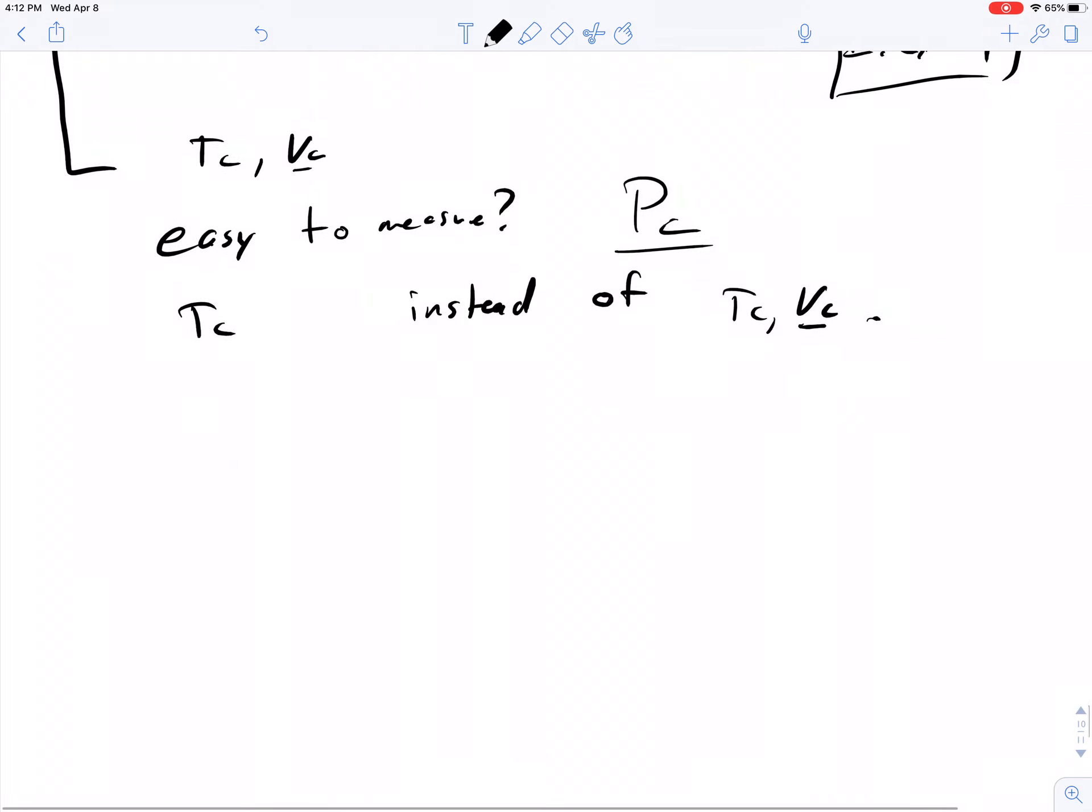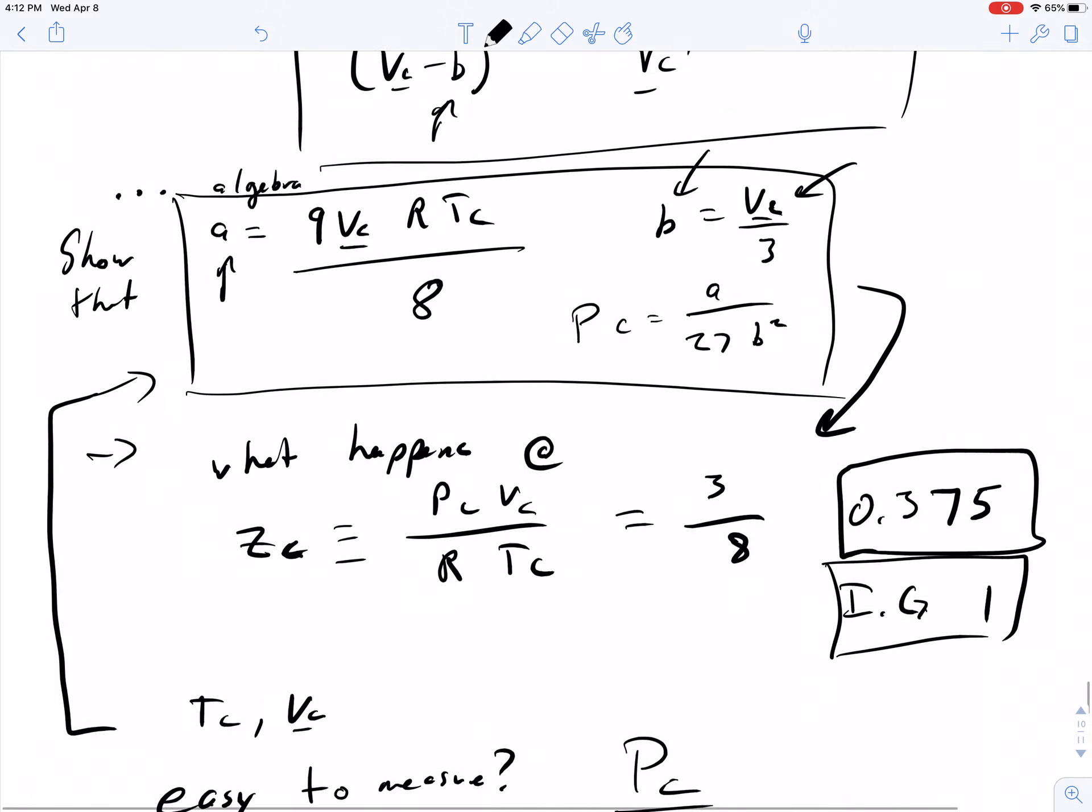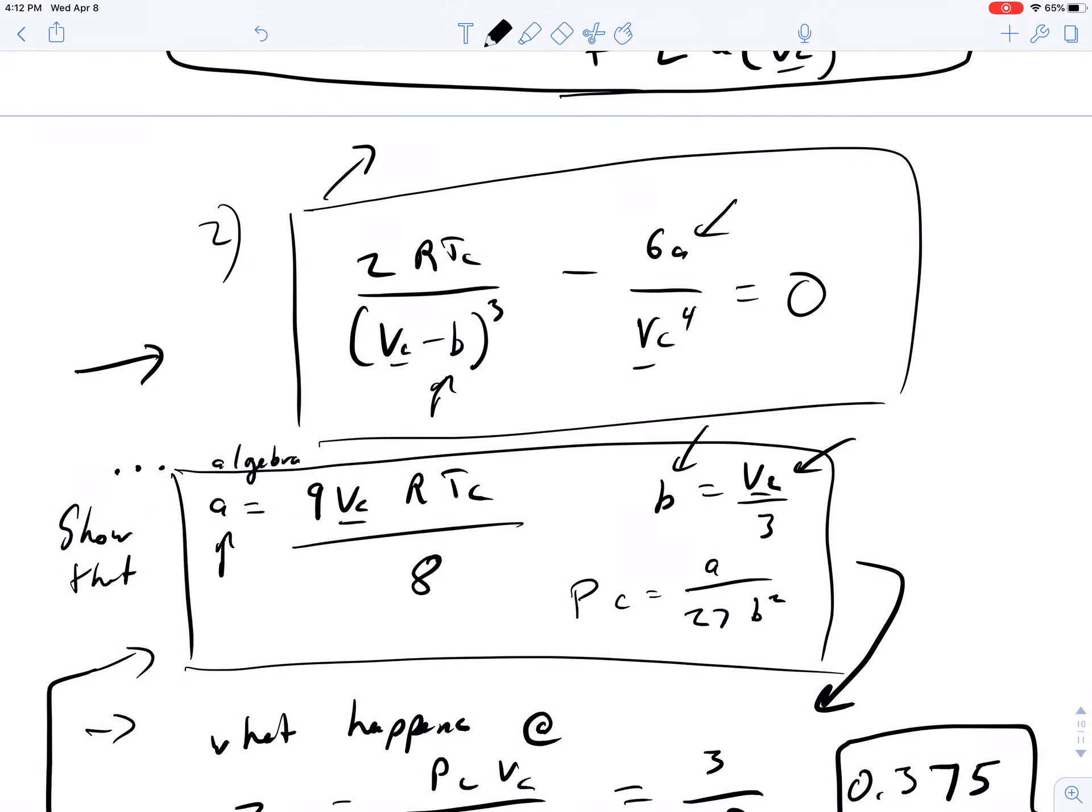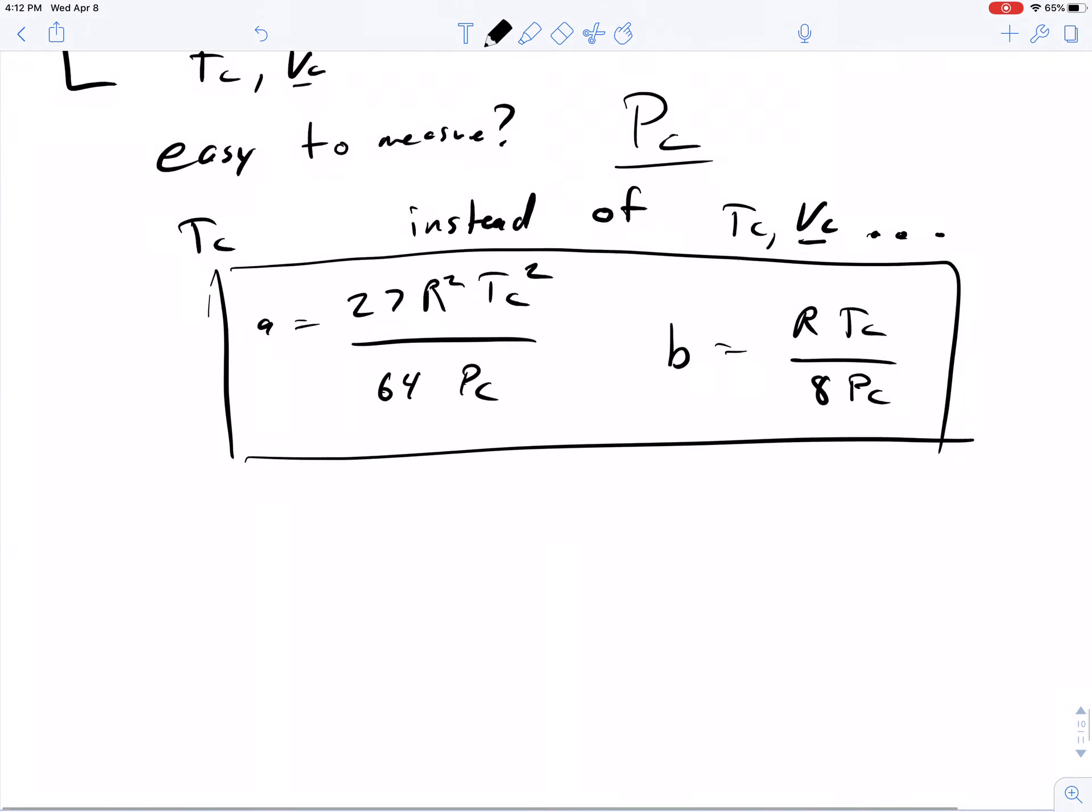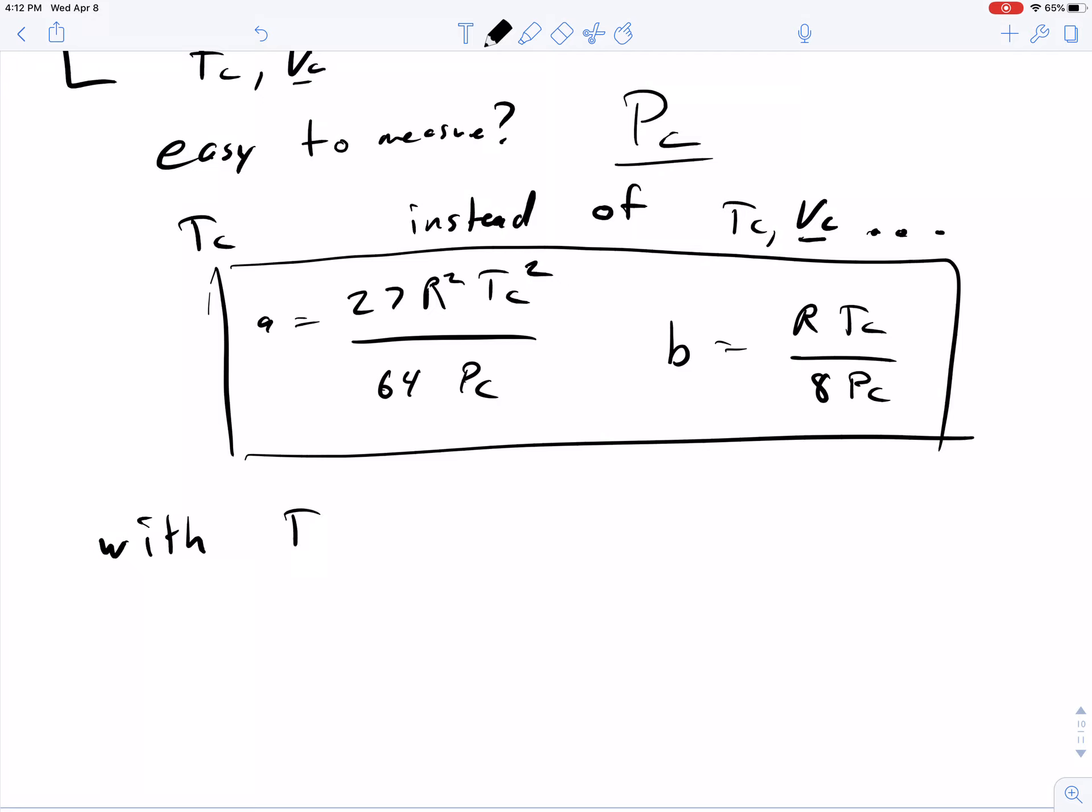When you do this, I'm going to actually assign this as an exercise, and you'll see the solution later. I'm going to have that be a problem that you work through, and then look up the solution once we provide the written solution. You'll find that A equals 27 R squared T squared over 64 PC, and B equals R times TC over 8 PC. Similar exact process to what we just did before, in terms of using TC and VC, but just with a substitution using TC and PC instead.